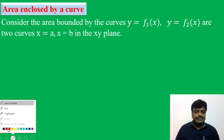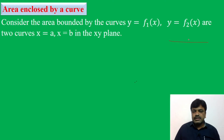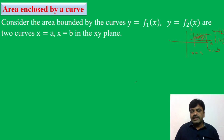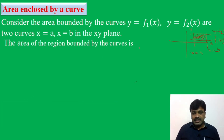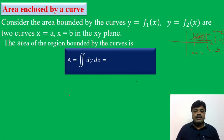Here, this is the x-axis and this is the y-axis. x equals a is this line, x equals b is this other line. y equals f1(x) is this curve, y equals f2(x) is another curve. This shaded region is our bounded region, and we want to find its area.